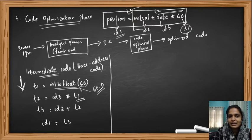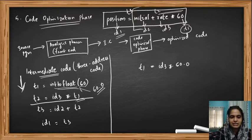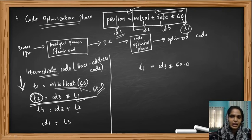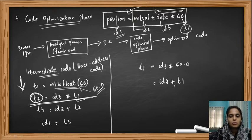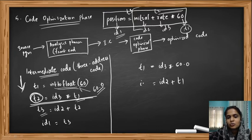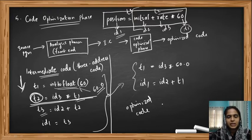Instead of writing ID3 * T1, we can directly write ID3 * 60.0 and store it in T1. Now we add ID2 + T1 and store it in a temporary variable. But we can see that we are not performing any more operations on T3 — we are directly storing it into ID1. So instead of using the temporary variable T3, we can directly store the result into ID1. This gives us our optimized code. The previous four instructions are reduced to just two instructions.